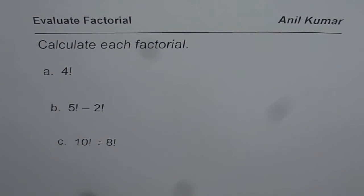The first one is 4 factorial. Then we have part B, 5 factorial minus 2 factorial. And then we have division, 10 factorial divided by 8 factorial.